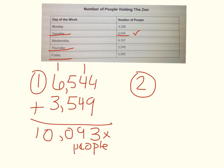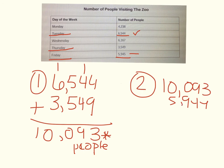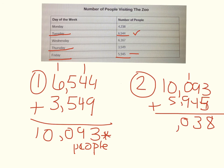Alright, we're going to take this sum and add our number from Friday, which is 5,949 people. Three plus nine is 12. Wait — let me redo this: we have 10,093 plus 5,949. Three plus nine is 12. Nine plus four is 13, regroup. One plus zero is one. One plus nine is ten, regroup. One plus zero is one. One plus five is six. So 16,038 people came to the zoo on Tuesday, Thursday, and Friday. If you didn't get these same totals, go back and see where you might have made a mistake and fix that.